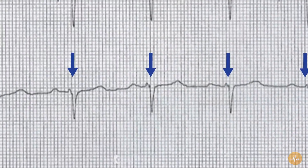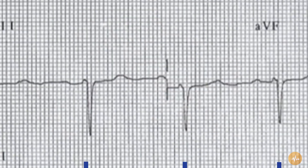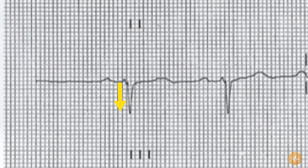The PR interval is borderline prolonged at 210 ms, or just over 5 small squares. The QRS duration is normal at less than 3 small squares.